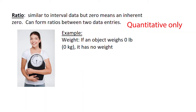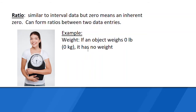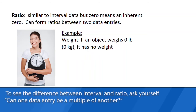Data at the highest level of measurement is ratio level data. It's similar to interval data, but zero means an inherent zero — that means zero means none. An example is weight: if an object weighs zero pounds or zero kilograms, it has no weight. We can form ratios and do math with ratio level data.